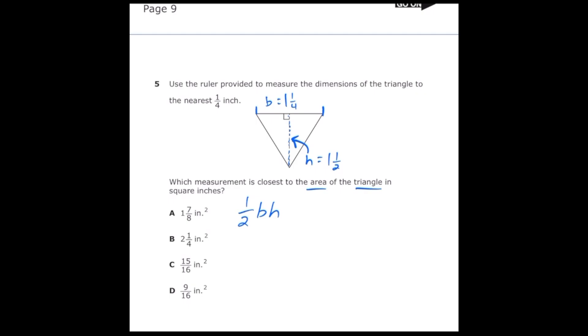Once I plug that into my formula, I'm going to have 1/2 times 1 and 1/4 times 1 and 1/2. If I go ahead and change my fractions to improper fractions, it's going to make it a lot easier to multiply. So 1 and 1/4 is going to become 5/4, and 1 and 1/2 is going to become 3/2.